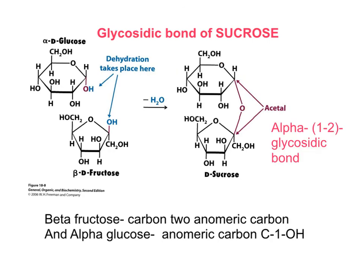In summary, sucrose is made of beta-fructose and alpha-glucose, with a glycosidic bond named alpha-1,2.